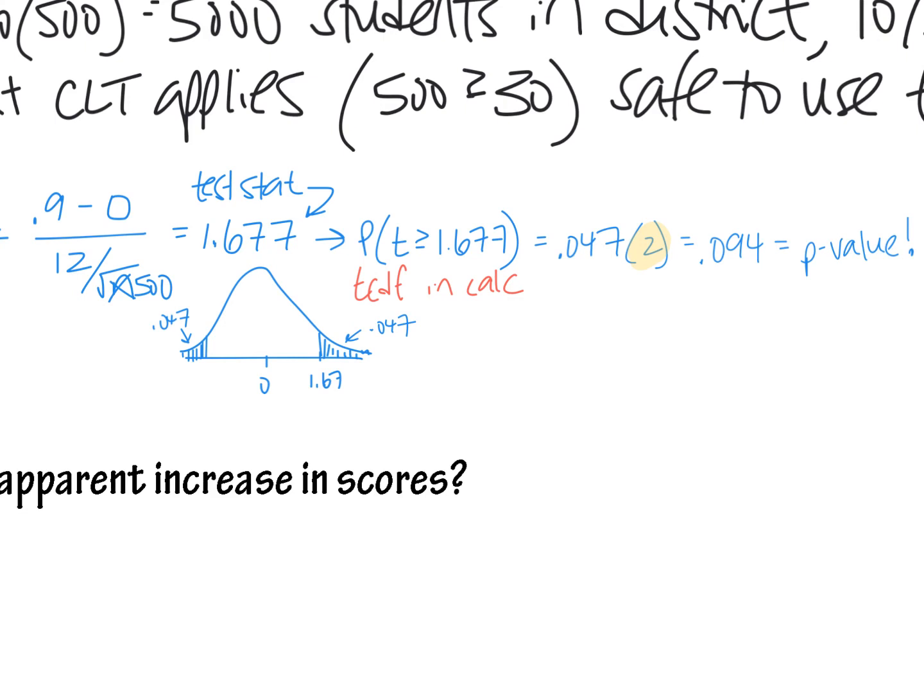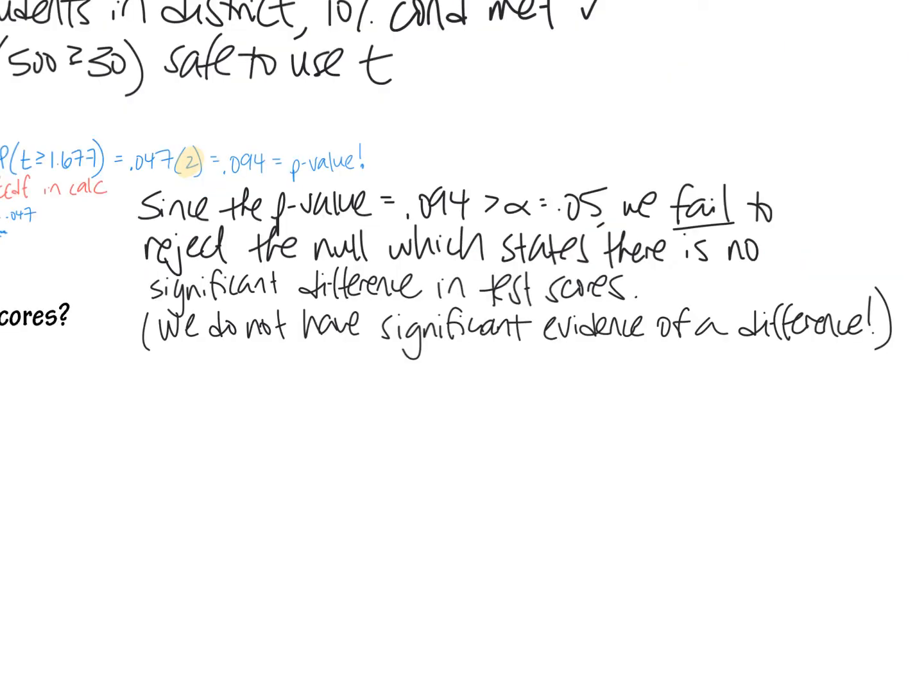Here's what my conclusion looks like. Remember, you always say like what the p-value is and how it compares to the alpha. Since the p-value is 0.094, yes, that's the doubled p-value, because it takes into account both tails, is greater than alpha, which is 0.05. That means we fail to reject. The p is not too low, so we do not reject. We fail to reject the null. And then remember, when you fail to reject, that just means you restate what the null was.